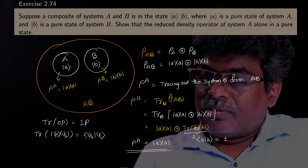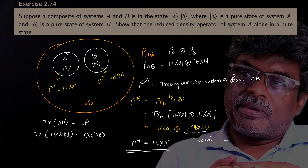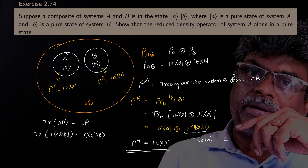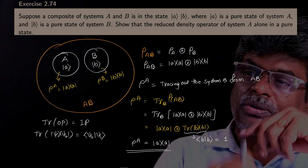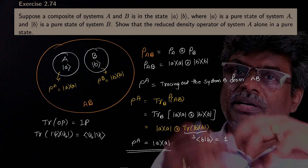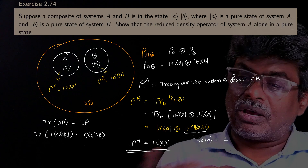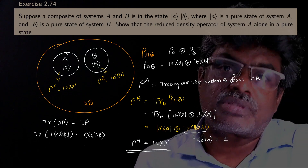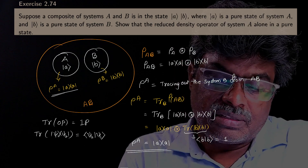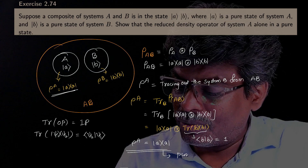Finally, we can say: whenever you have a composite system AB, if you are finding the reduced density operator corresponding to any particular system — that is nothing but tracing out the other system from the composite system — then it always represents a pure state.